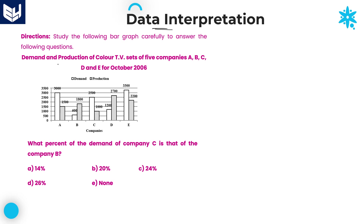First of all, we need to read the information carefully and then solve the questions according to the given information. The information is about demand and production of color TV sets of five companies A, B, C, D, E for October 2006.